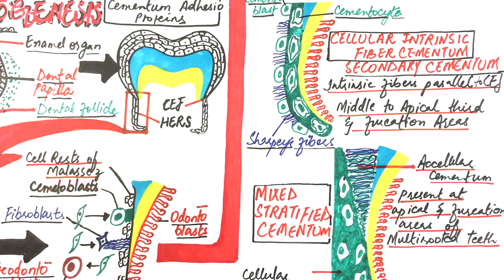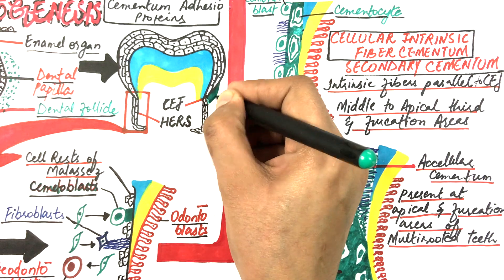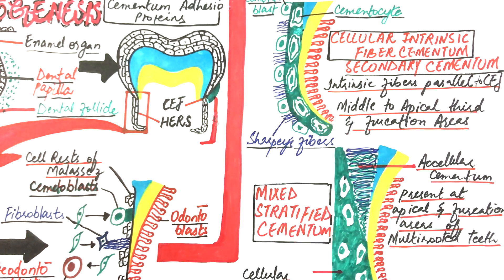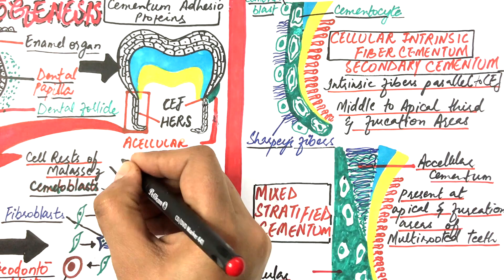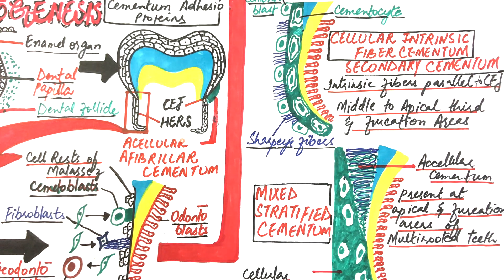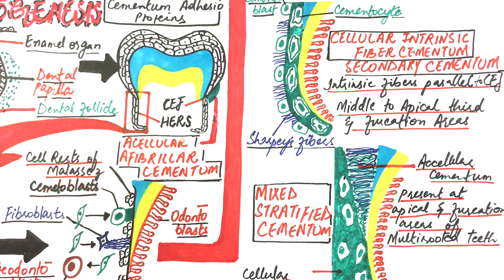Another type of cementum present at the cervical margin of the tooth is acellular afibrillar cementum, which as the name suggests has no cells and no intrinsic or extrinsic fibers. It forms when there is premature loss of the reduced enamel epithelium from the tooth crown, causing connective tissue cells to come into contact with the enamel at the cervical area. As a result, a thin layer of cementum deposits on the enamel at the cervical margin, devoid of cells and fibers, hence the name acellular afibrillar cementum.